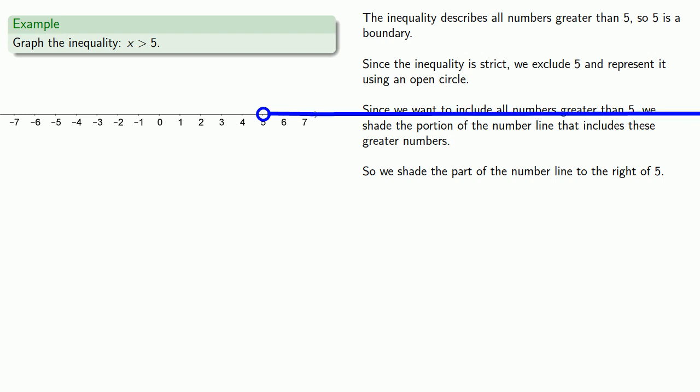In fact, we can never stop because we want everything that's greater than 5. But we only have a finite amount of paper, so instead of going to the right forever, we'll use an arrow to indicate that we never stop going to the right.